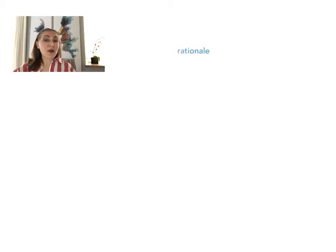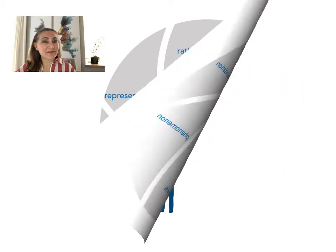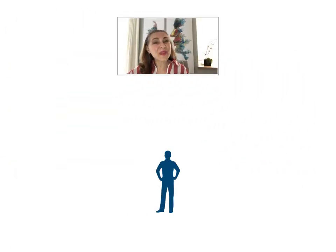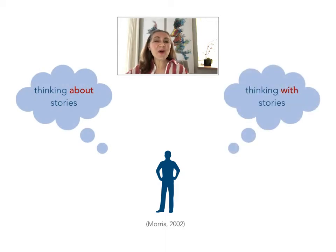Disciplined and systematic. Narrative inquiry encompasses the standard elements of empirical research, including a rationale, theoretical foundation, phenomenon of interest, ethically justifiable methods, rigorous analysis, and scholarly representation of results. Each, however, is interpreted through a narrative lens. In other words, the inquirer thinks about stories and with stories. It's difficult to separate these two tasks because they happen simultaneously, but I do so here for the purposes of illustration and explanation.